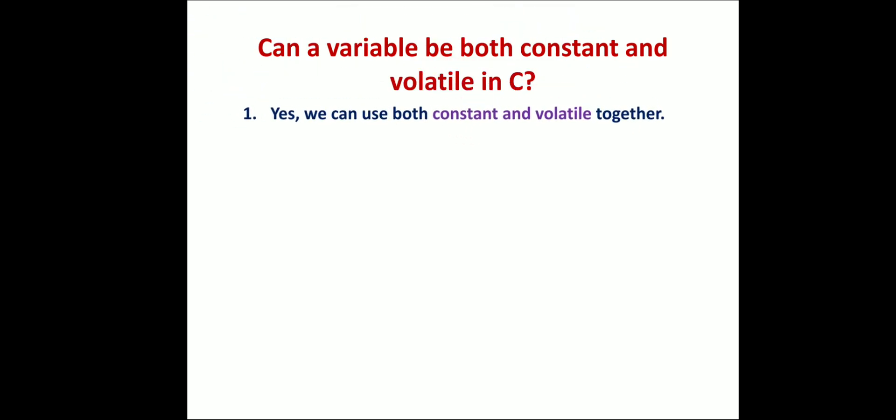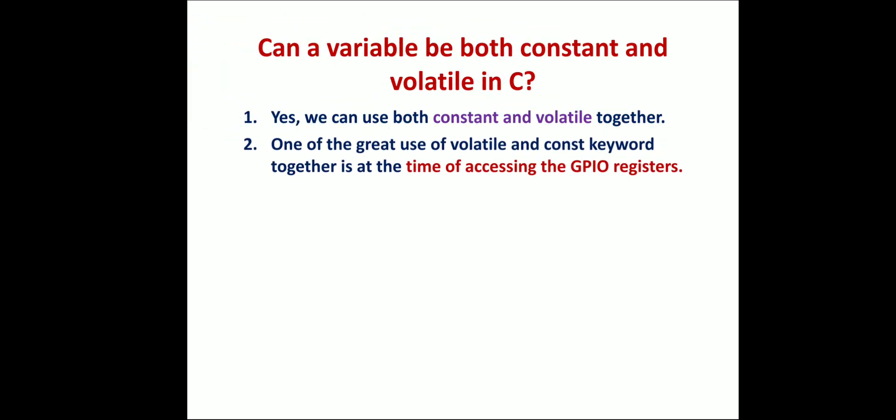Can a variable be both constant and volatile? You've seen that volatile changes every time if any changes happen, and const never changes. The question is: Can a variable be both constant and volatile in C? Yes, we can use both constant and volatile together.